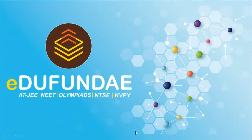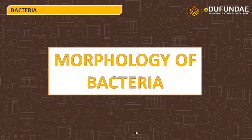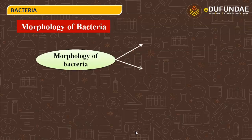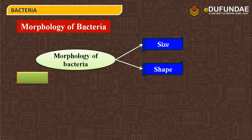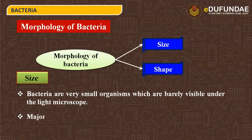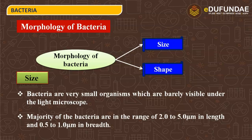Welcome to Edufunday. I am your mentor for the topic Morphology of Bacteria. Morphology comprises the size and shape — how bacteria look and what their size is. Bacteria are very small organisms barely visible under the light microscope. The majority of bacteria range from 2 to 5 micrometers in length and 0.5 to 1 micrometer in breadth.